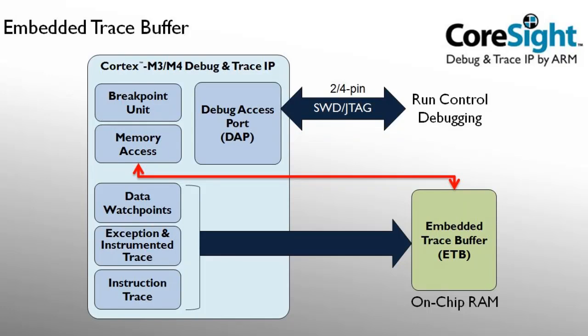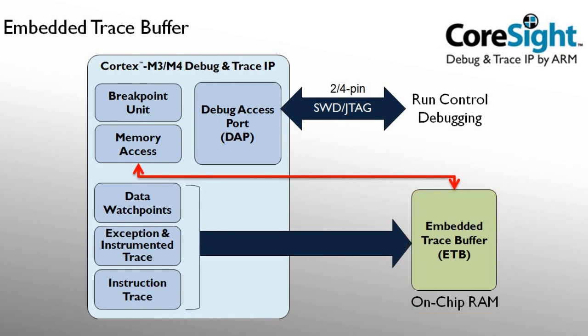Some Cortex-M3/M4 microcontrollers provide an ETB, or the embedded trace buffer. ETB streams the trace information into an on-chip RAM that can be read via the normal run control interface. In this mode no additional trace pins are required, but the amount of trace information is limited by the on-chip RAM. Therefore, it is important that your debugger offers triggering of trace information based on program conditions.